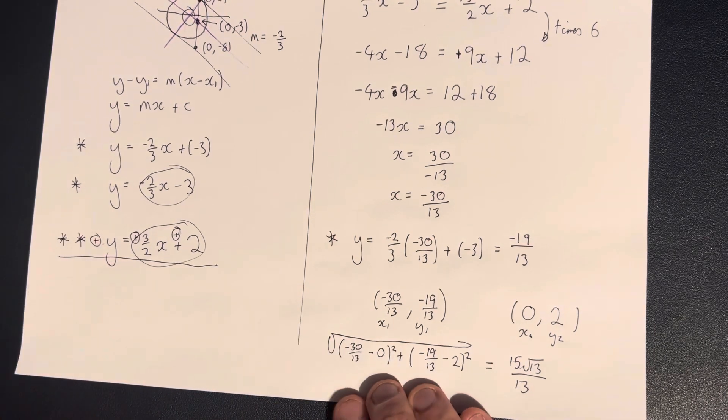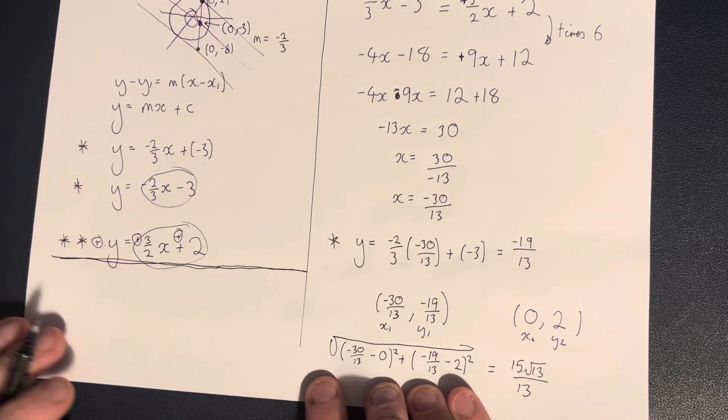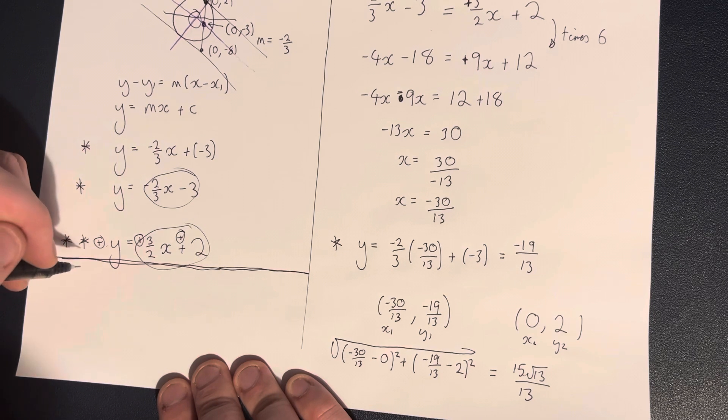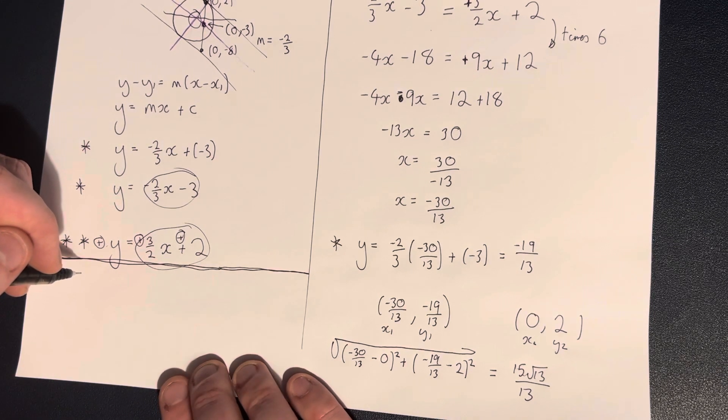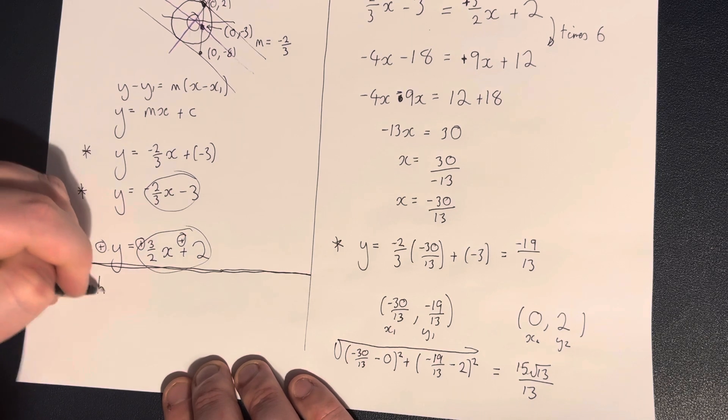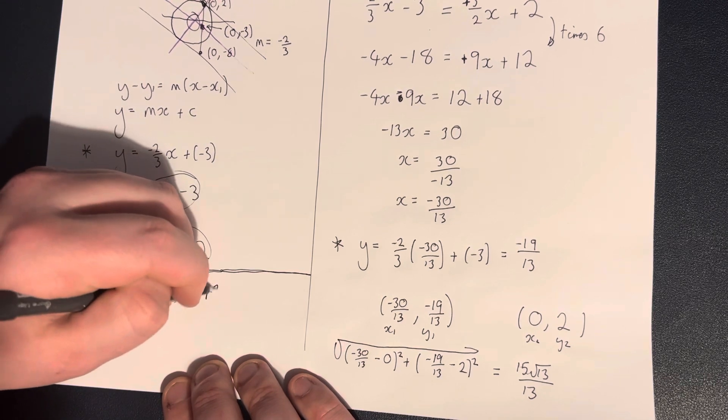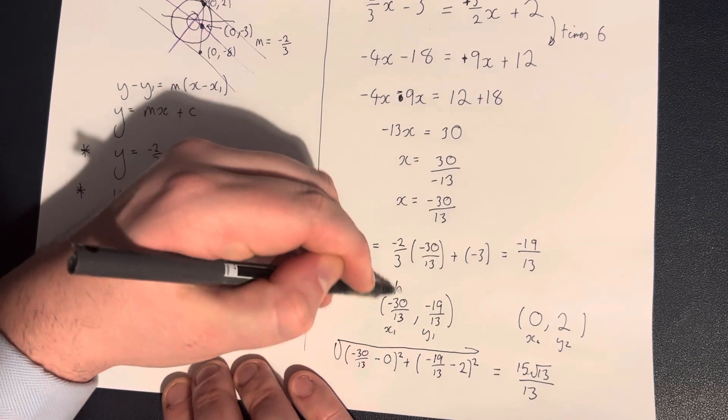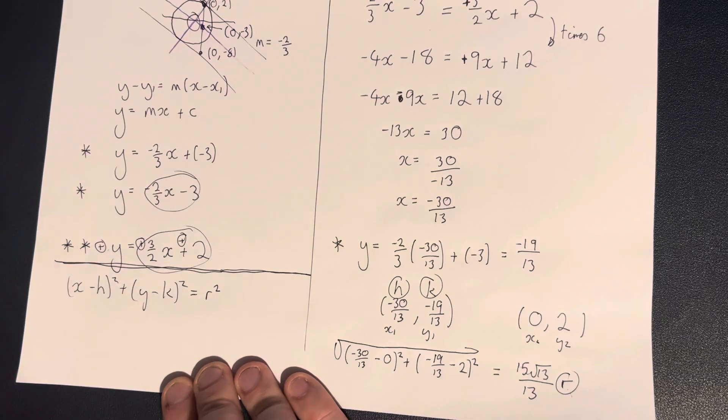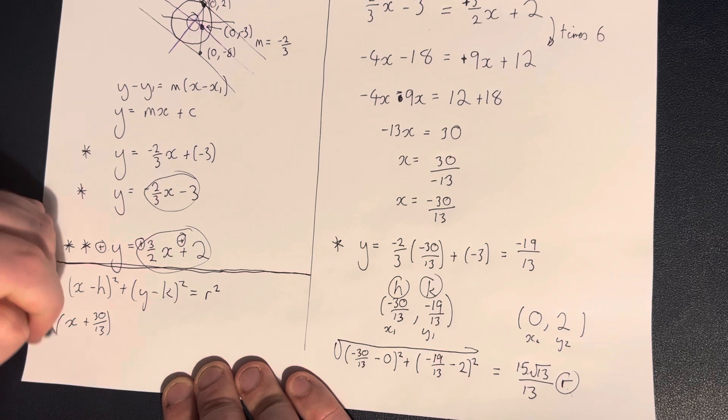I'm going to do it down this little corner here again, very bad. I'm so out of how to making videos. We are now going with our x minus h squared, plus y minus k squared is equal to r squared. This is going to be our h, this is going to be our k, and this is going to be our r. So we have x plus 30 over 13 squared, plus y plus 19 over 13 squared is equal to 15 root 13 over 13.